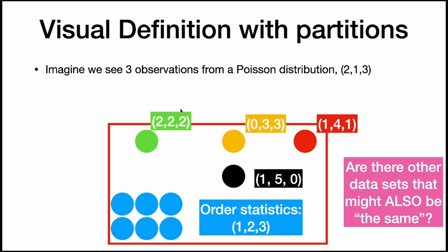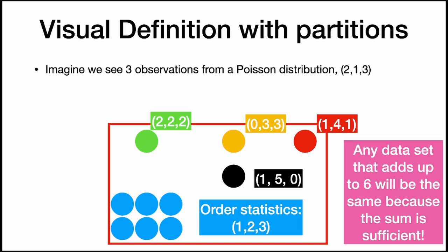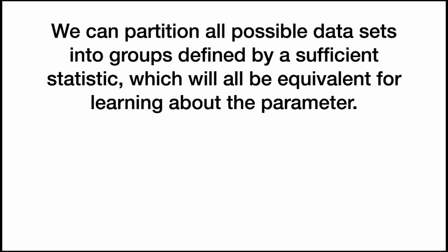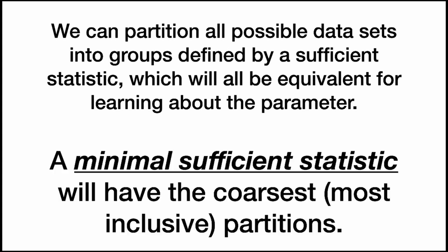If we have data sets that also add up to 6 in different ways, they should give us the same conclusions about our parameter lambda. So all data sets that add up to 6 are the same because the sum is sufficient. We have now grouped our data in a way that is even more inclusive. We can partition all possible data sets into groups defined by a sufficient statistic, and a minimal sufficient statistic will have the coarsest or most inclusive partitions.